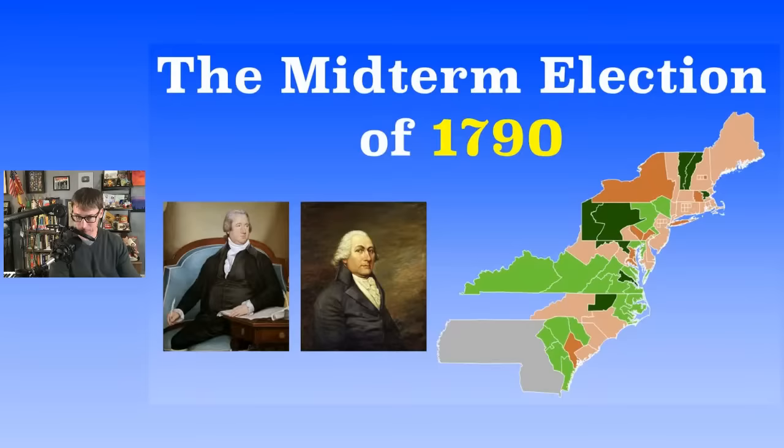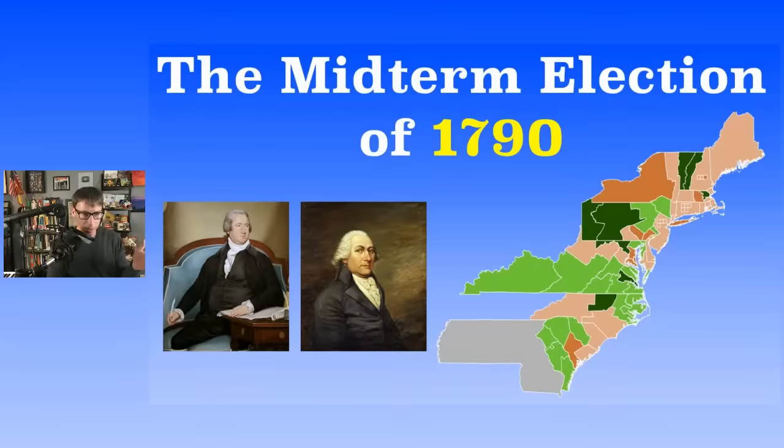On the left is the Speaker of the House, the highest-ranked person in the House of Representatives — that's Frederick Muhlenberg. So when you see these pictures, those are the two people that were in power at the time. A lot of times these elections happened and that changed.